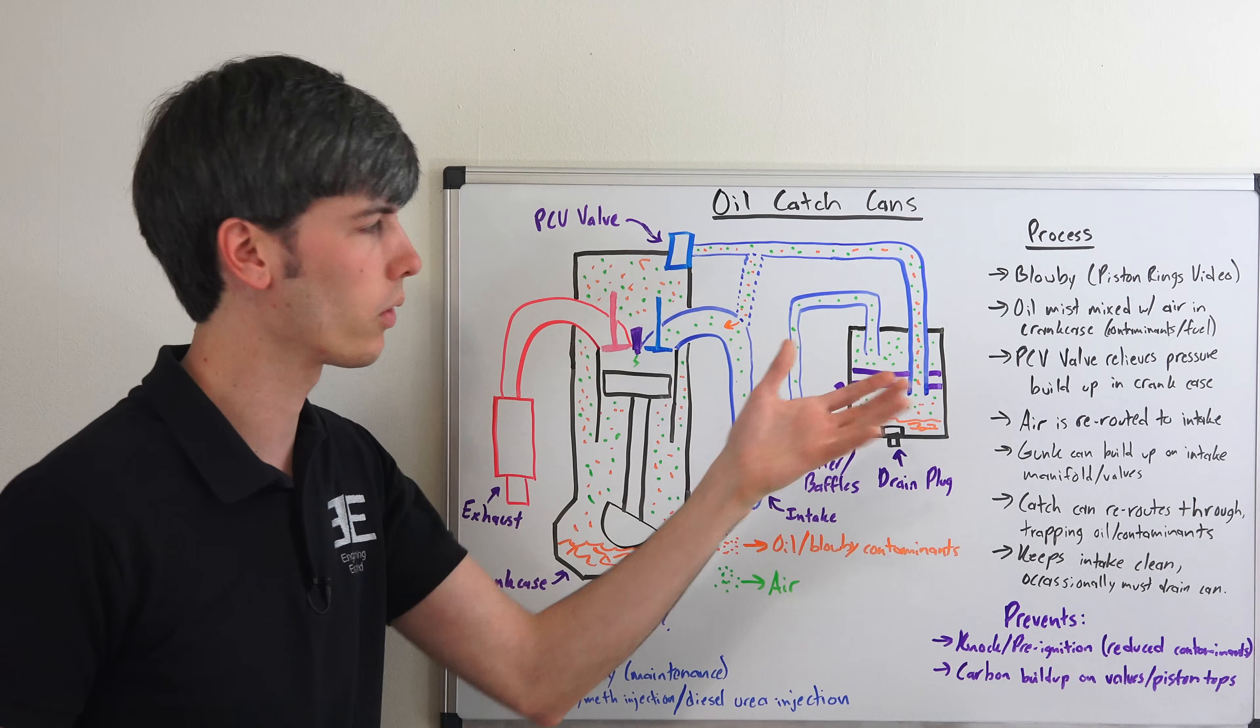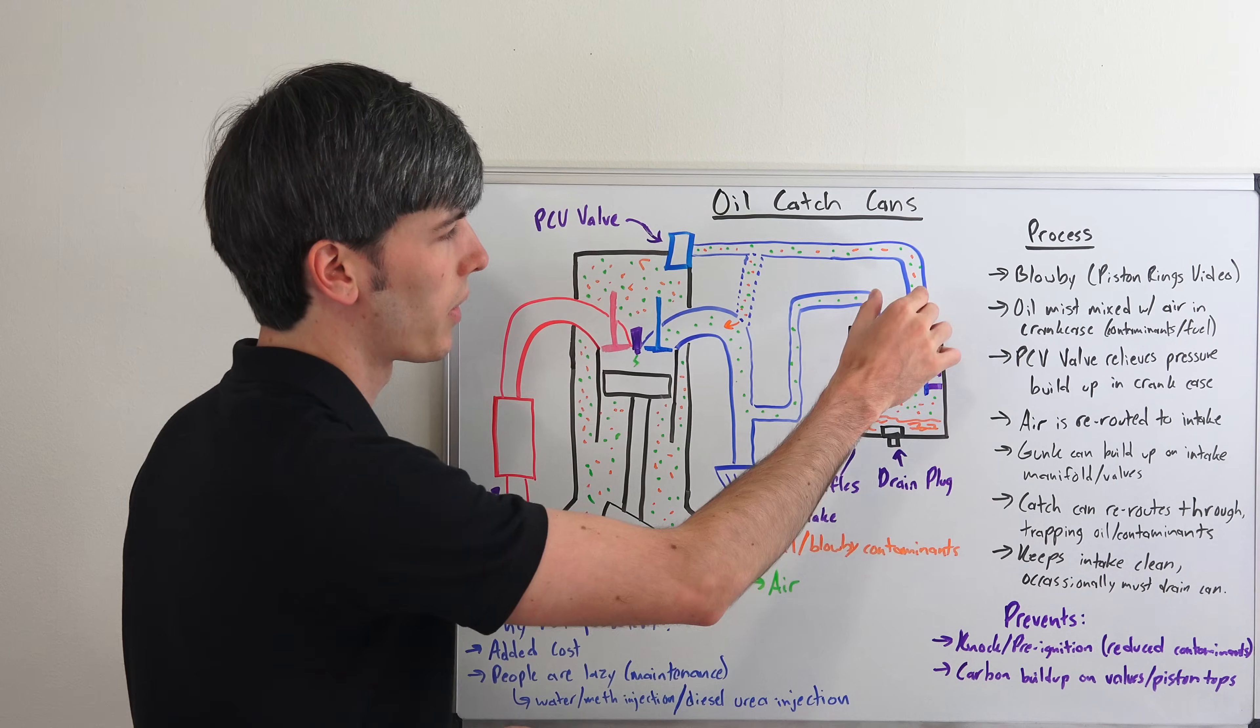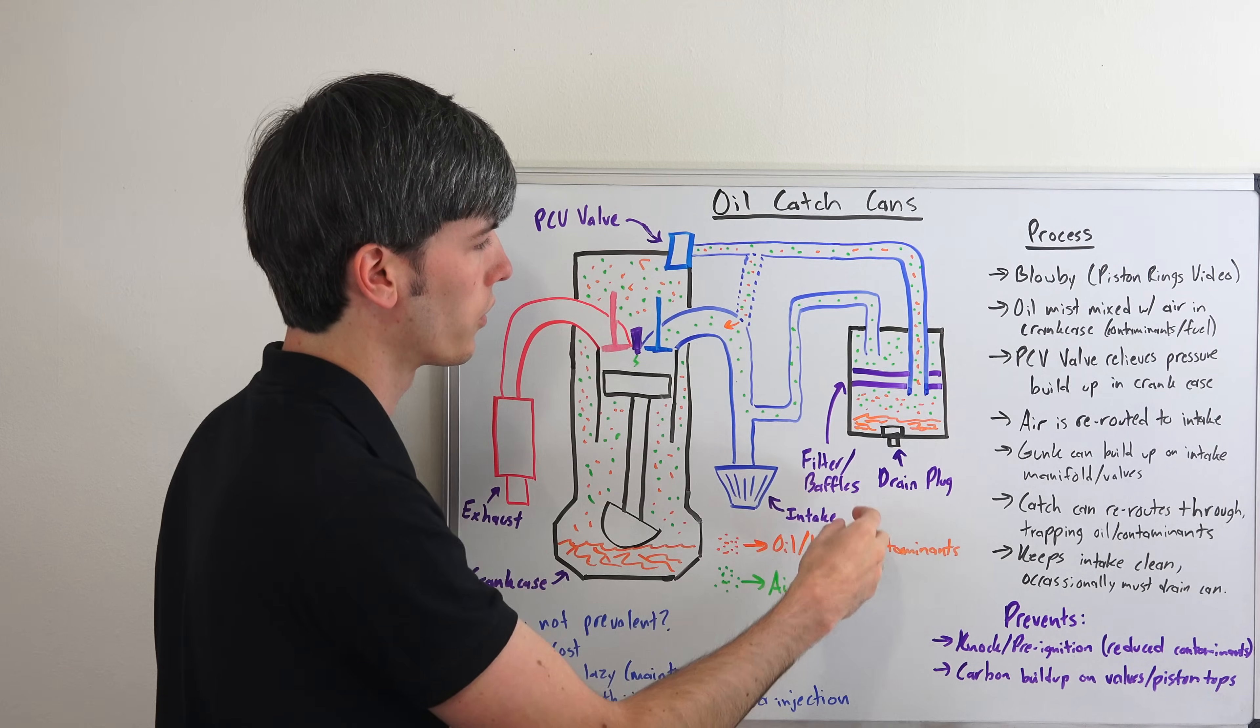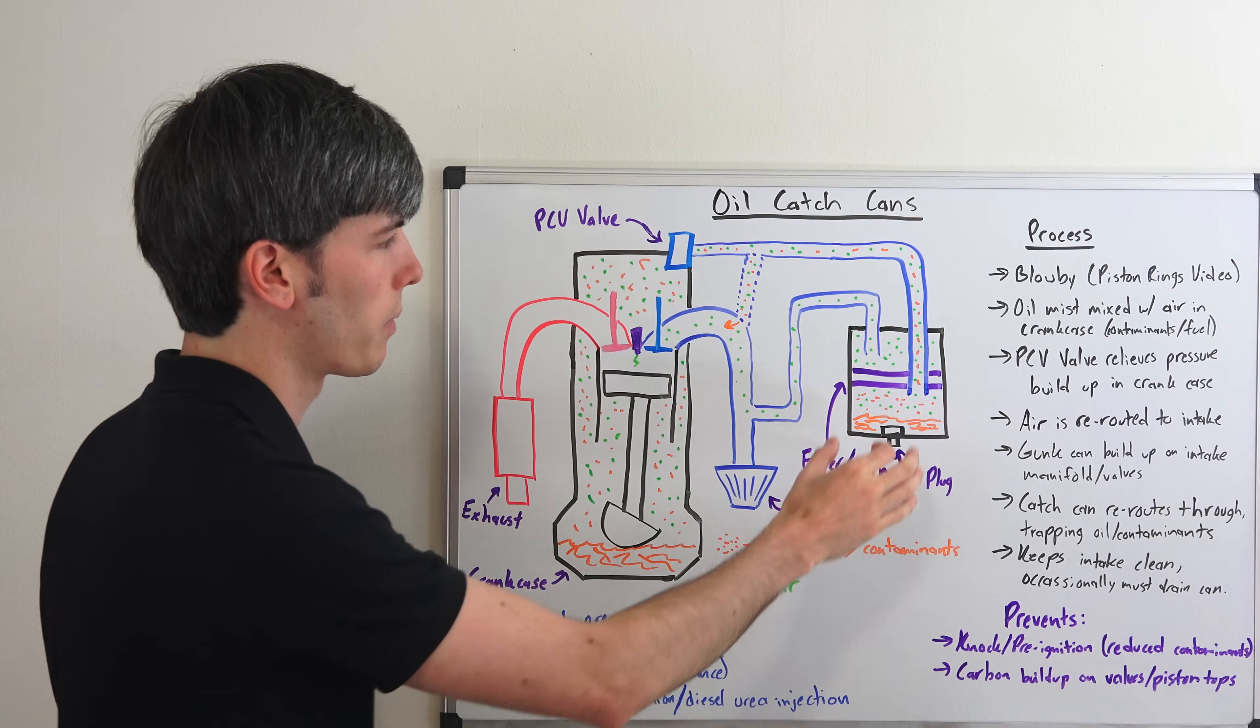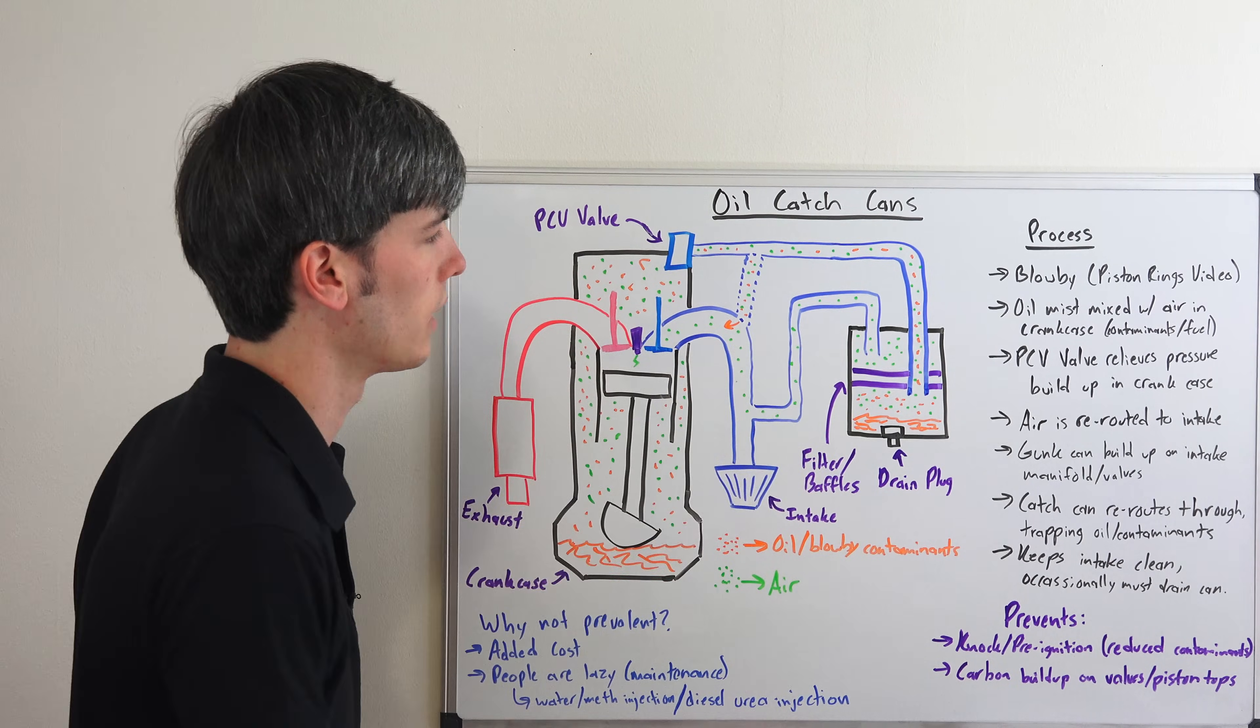Now you're going to have different quality of oil catch cans out there, so you want to make sure that there's actually something going on inside. Some of them will literally just have two hoses, just a real cheap thing, where you have one hose coming in and another hose and you're really not going to be doing all that much. You want to make sure you've got a filter or some baffling systems in there so that that oil can't leave.